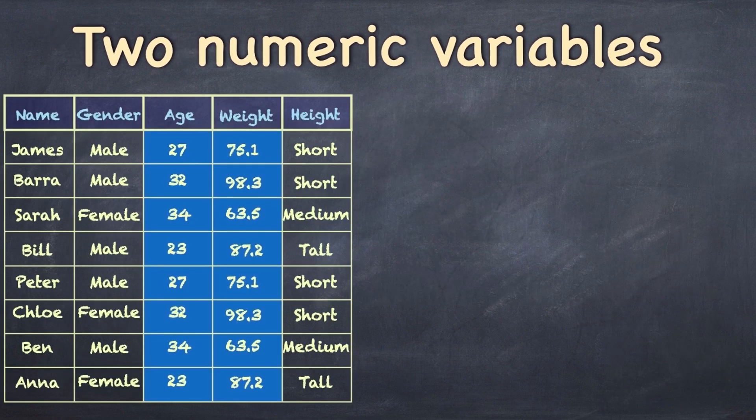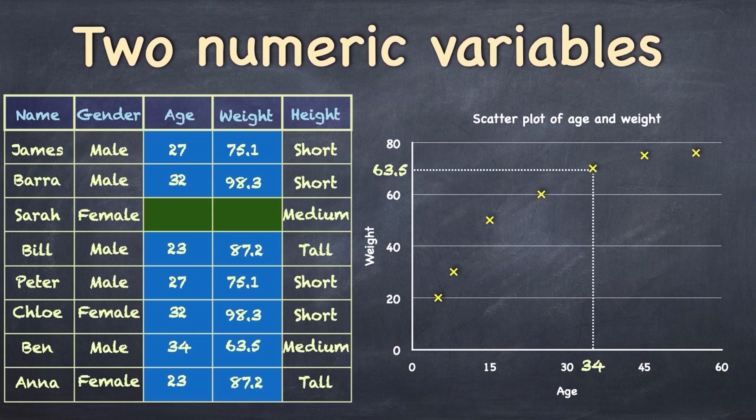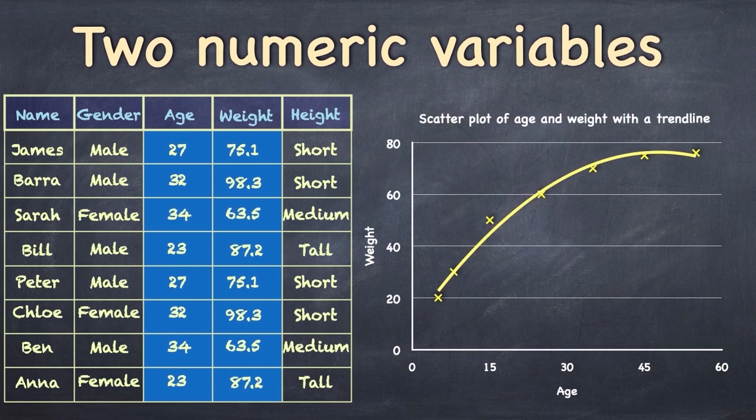If you have two numeric variables, how are you going to visually represent them? Well, one thing you can do is you can create a scatter plot. So a scatter plot is where each point corresponds to the x and the y coordinates of a given observation or in this case a person. So, for example, we've got Sarah, she's 34 years of age and she weighs 63.5 kilograms. So this is her point on the scatter plot. And of course, you can add a trend line. And remember, by convention, we usually plot the independent variable on the x axis and the dependent variable on the y axis.